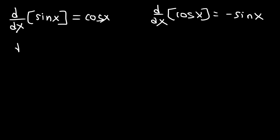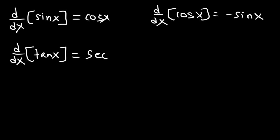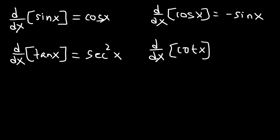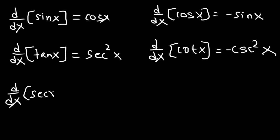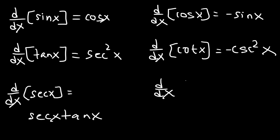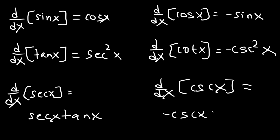Now look for a pattern as I write these trigonometric functions. The derivative of tangent is secant squared, and the derivative of cotangent — the co-function of tangent — is cosecant squared but with a negative sign. The derivative of secant is secant x tangent x, and the derivative of cosecant x is negative cosecant x cotangent x.